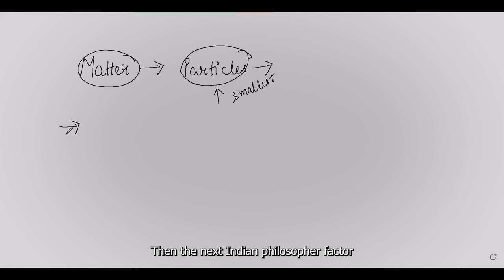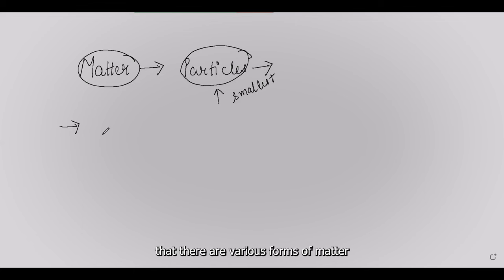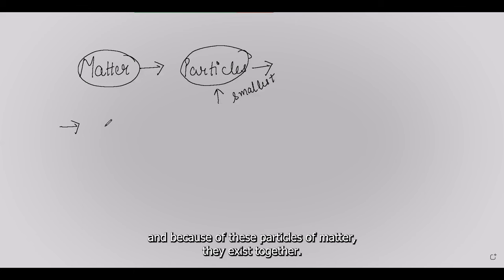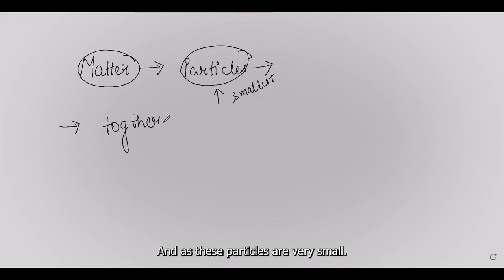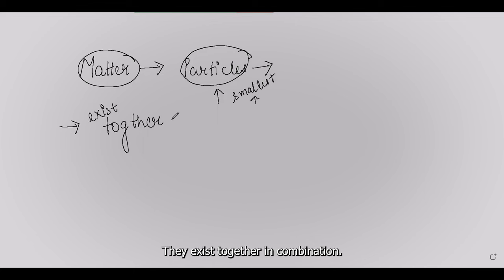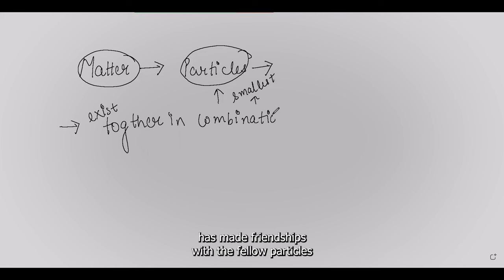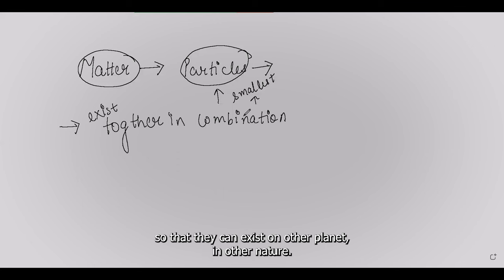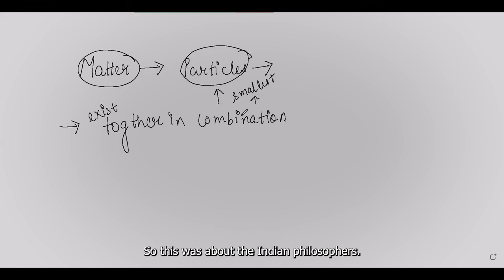The next Indian philosopher, Pakhuda Katyaayam, postulated that there are various forms of matter, and that particles of matter exist together in combination. These particles are very small, and chemistry is about how they exist. They exist in combination — they make friendships with fellow particles so that they can exist in nature.